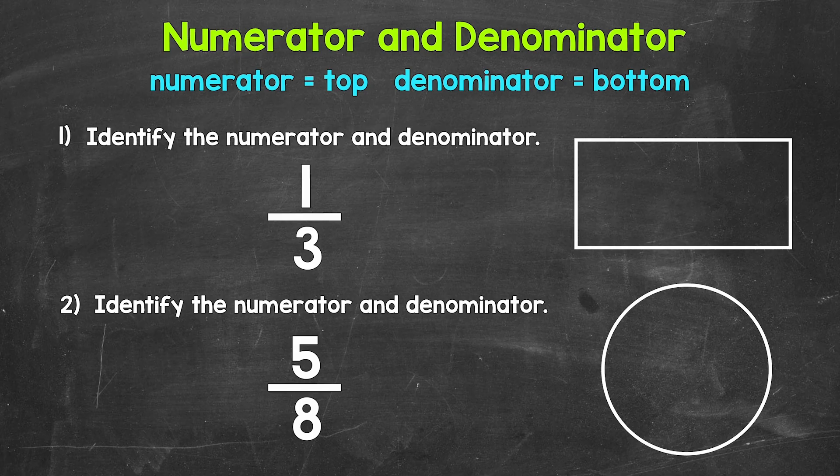Now simply put, the numerator is the top number of a fraction and the denominator is the bottom number of a fraction. But what do the numerator and denominator represent? What do they mean?